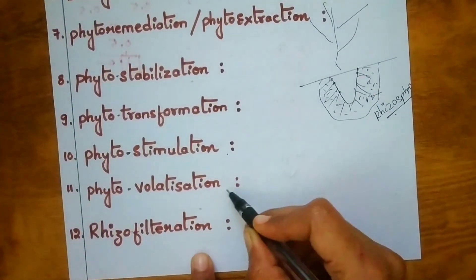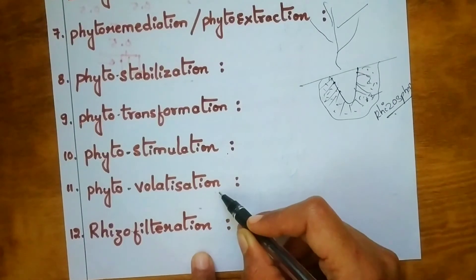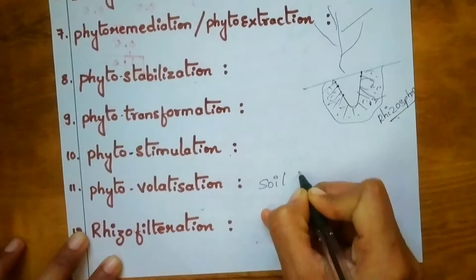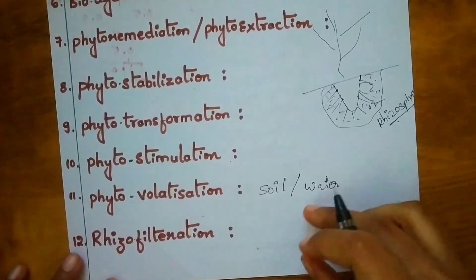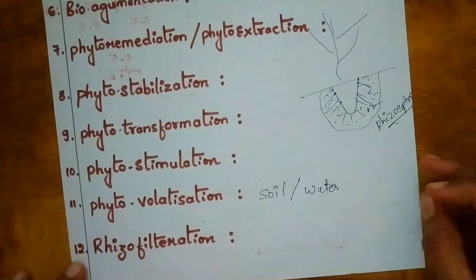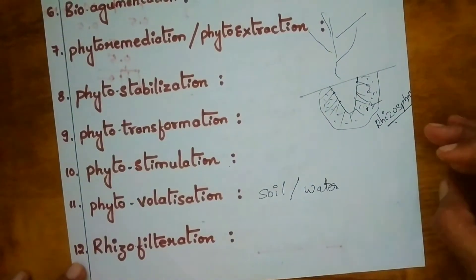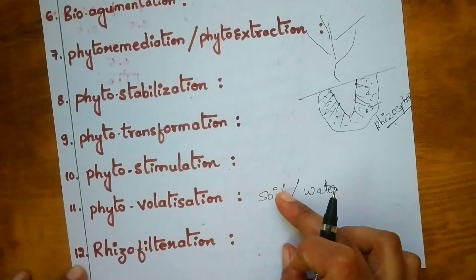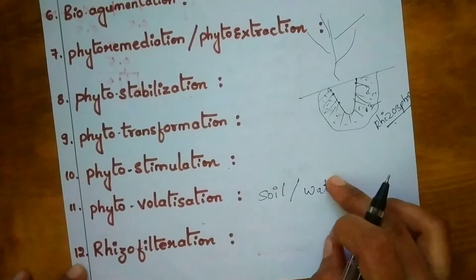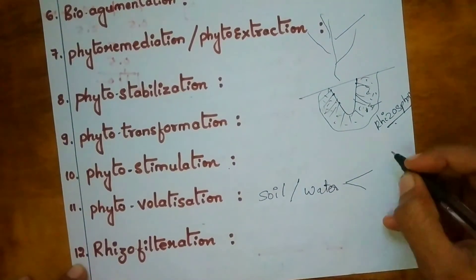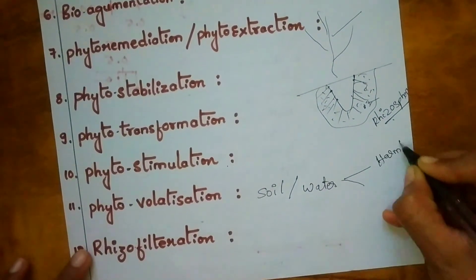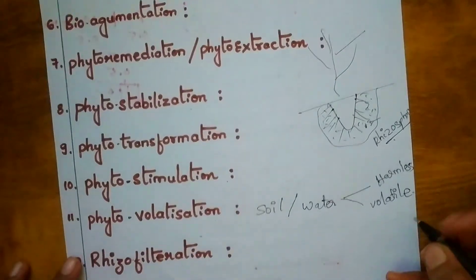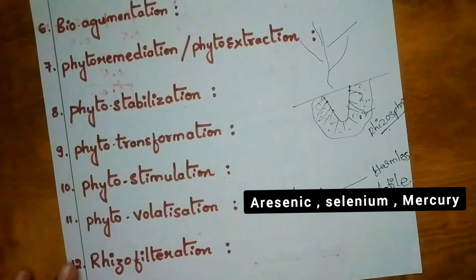Phytovolatilization is the uptake of substances from soil or water and releasing them into the atmosphere in a harmless or volatile form. You are taking toxic substances from soil or water and releasing them into the atmosphere in harmless form. Examples include arsenic, selenium, or mercury.